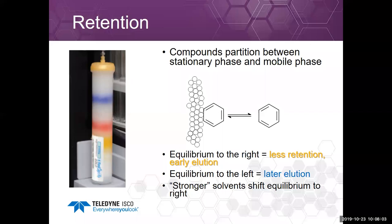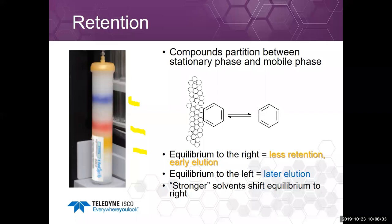In chromatography, retention occurs as compounds partition between the stationary phase and the mobile phase. Equilibrium shifted to the right means less retention and earlier elution; equilibrium to the left — bound to the stationary phase — means later elution. The yellow band comes out earlier with less retention, while the blue band elutes later. A stronger solvent shifts the equilibrium more to the right, so the compound spends more time in the mobile phase and comes out earlier. We therefore run a gradient from weak solvents to strong solvents.